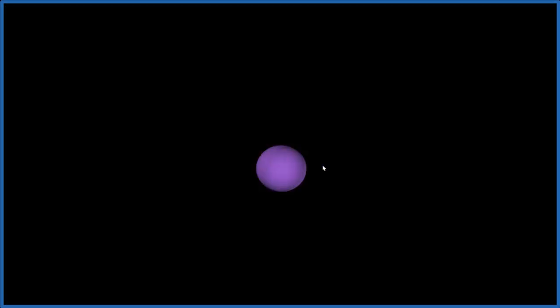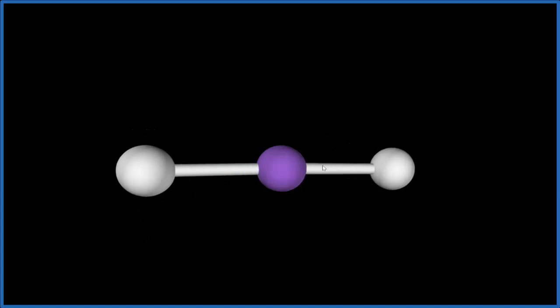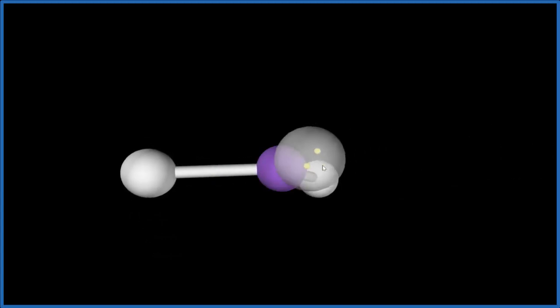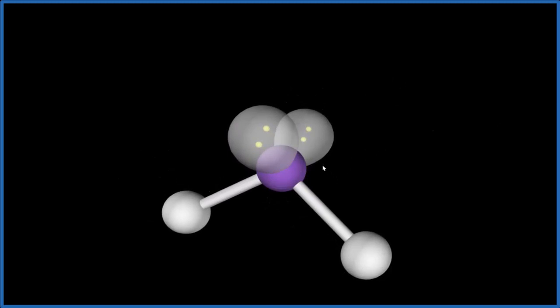We'll consider the purple here to be our sulfur. We'll add two bromine atoms. They'll spread out, looks like a linear molecule, except we still have those two lone pairs. So we drop those in, and that pushes everything down.